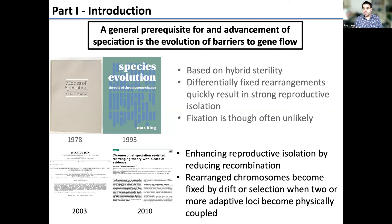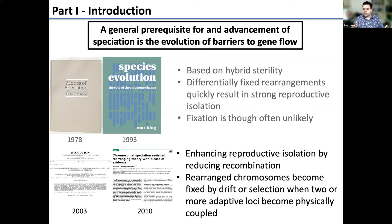More recent takes on chromosomal speciation suggest that rearranged sections of the genome could enhance reproductive isolation by reducing recombination — basically shielding that part of the genome from recombination, advancing the buildup of genomic barriers that then spread throughout the genome. Under this scenario, rearranged chromosomes could become fixed either by drift or through selection — for example, when two or more adaptive alleles become physically coupled through chromosome fusion.